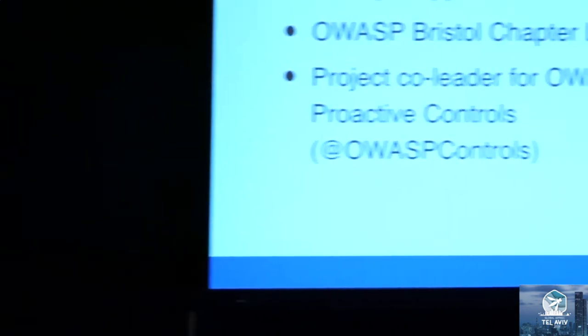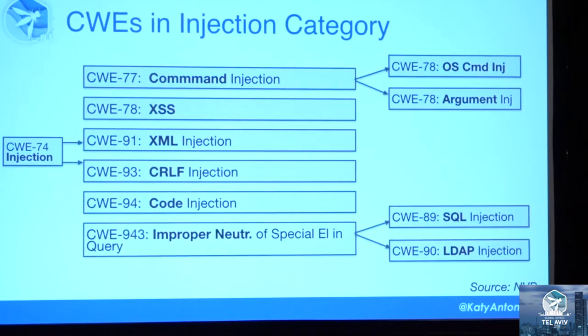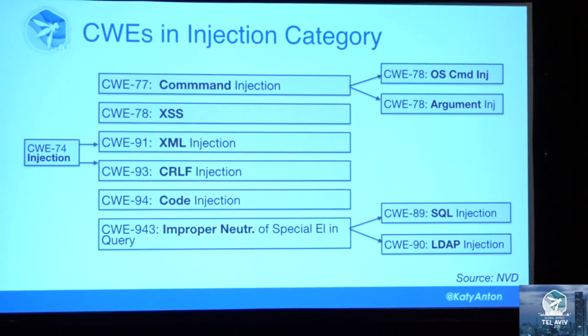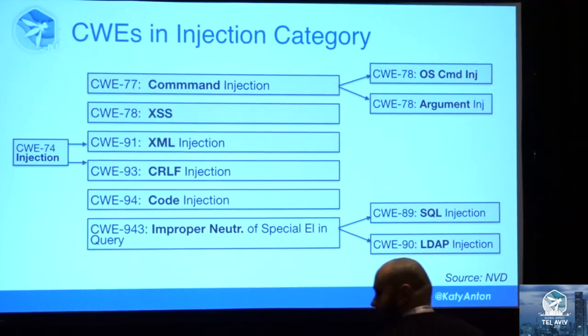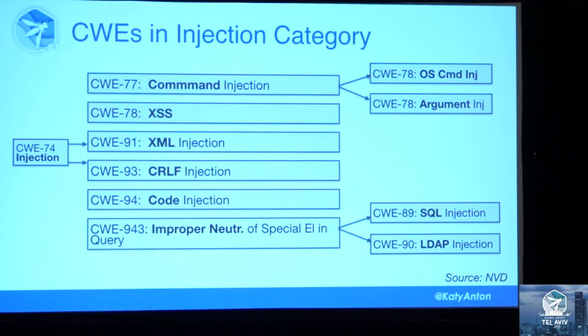The first category of vulnerabilities I will tackle is injection. This is still one of the most common vulnerabilities found in software applications. As a category, it is a large one and contains multiple types: command injection, cross-site scripting, XML, code injection, LDAP injection, SQL injection — just to name a few.